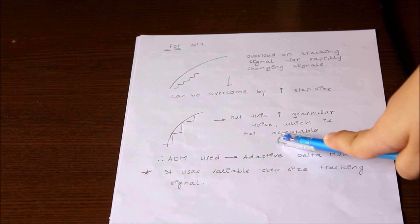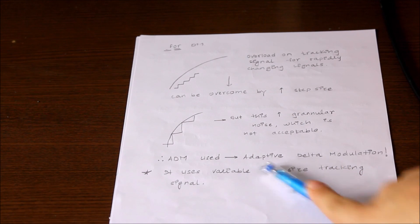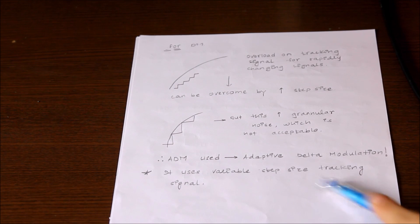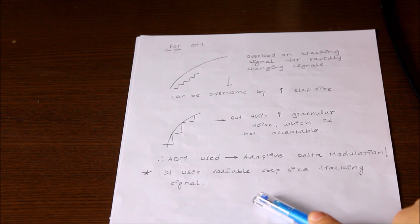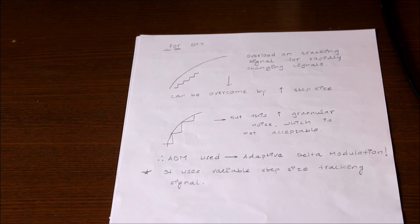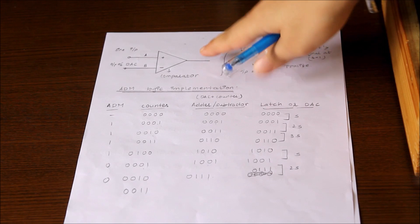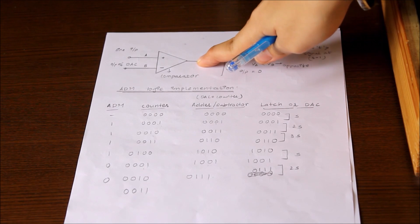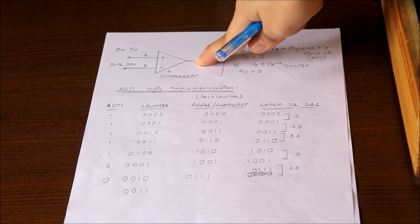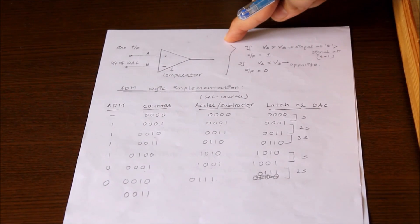Therefore, we use ADM, in which the variable step size helps us track the signal properly. The comparator is the basic system performing the actions required to get us an ADM output.